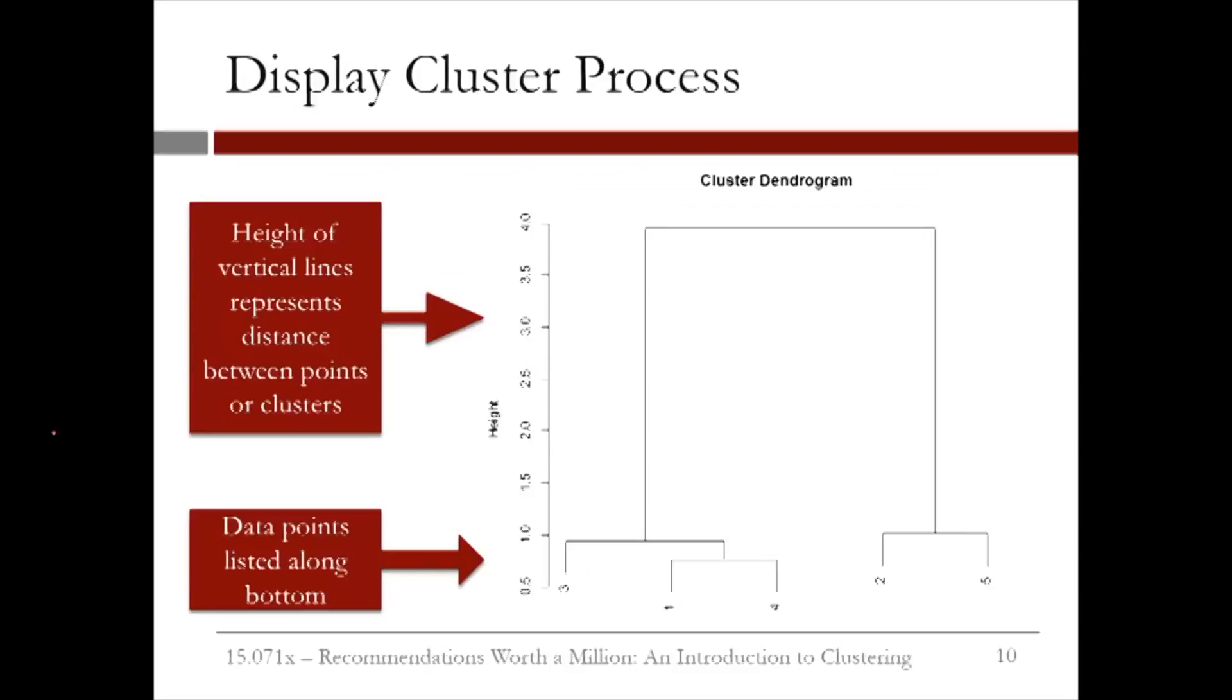The hierarchical cluster process can be displayed through what's called a dendrogram. The data points are listed along the bottom, and the lines show how the clusters were combined. The height of the lines represents how far apart the clusters were when they were combined.